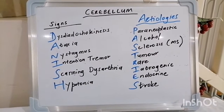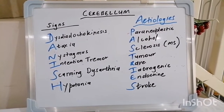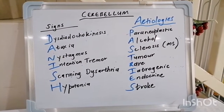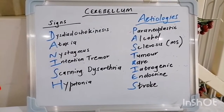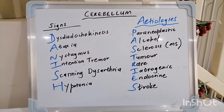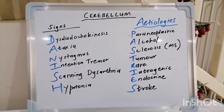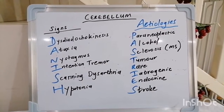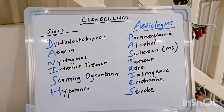Hello and I greet you in the awesome name of Jesus. Today we're talking about cerebellar issues. The mnemonic is Danish pastries. First up, a quick joke: which pastry is the most religious? It's the donut, because its holiness cannot be denied.